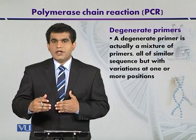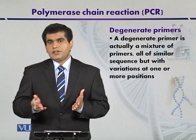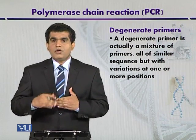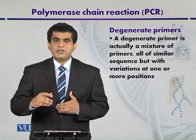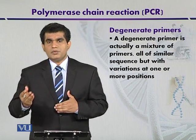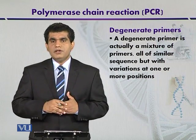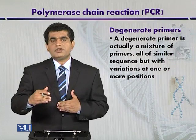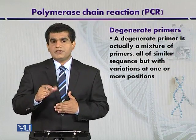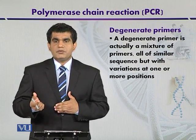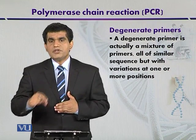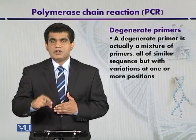One situation in which we use degenerate primers is when we don't have direct nucleotide sequence information, but we have information from a protein molecule, like from the sequence of amino acids. We have an amino acid sequence from a protein.